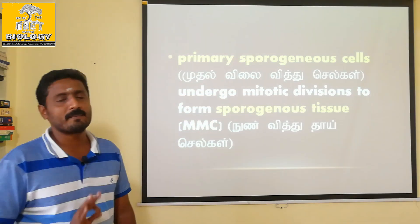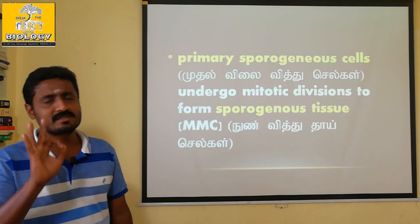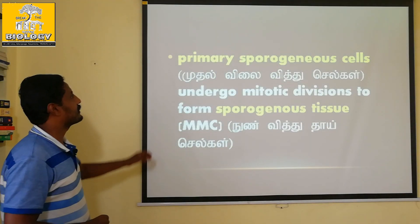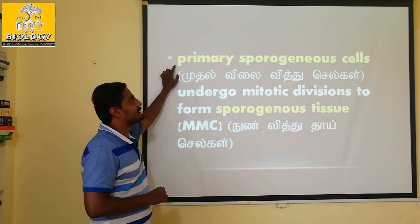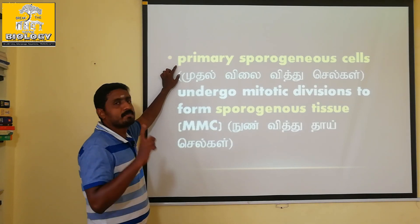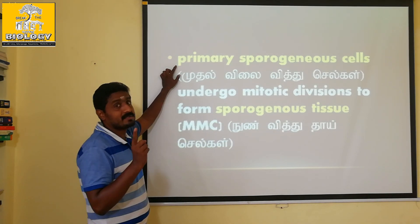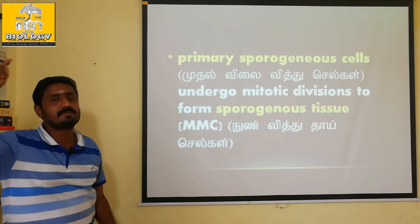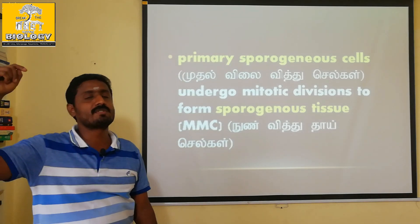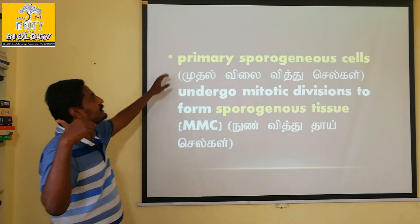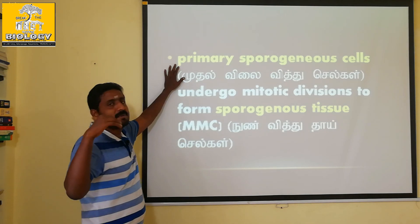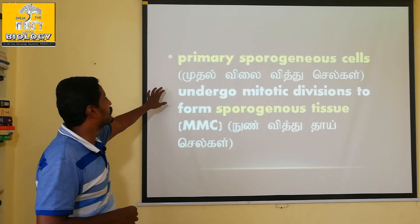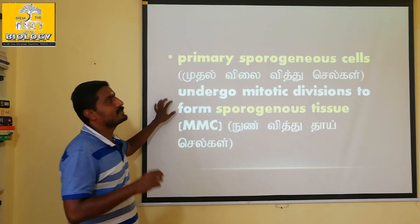There are three steps. Just three steps. The first step is primary sporogenous cells. Primary sporogenous cells — primary sporogenous cells is the first step.